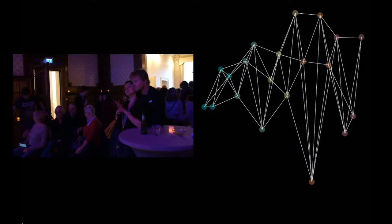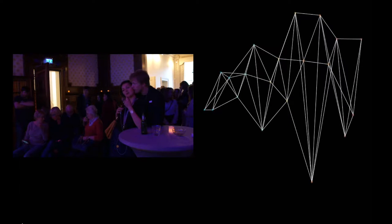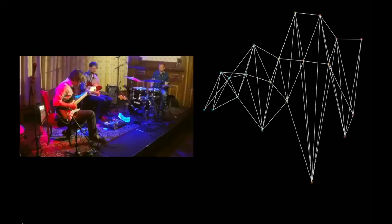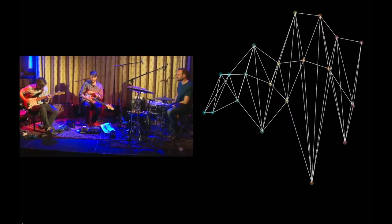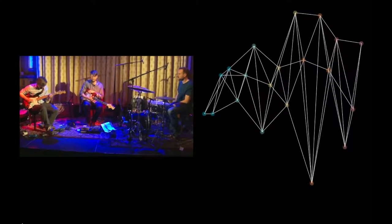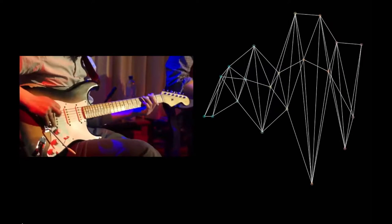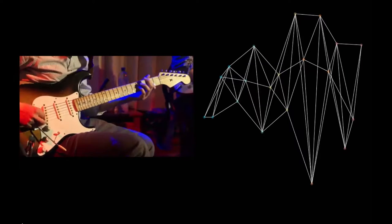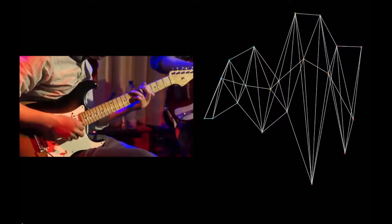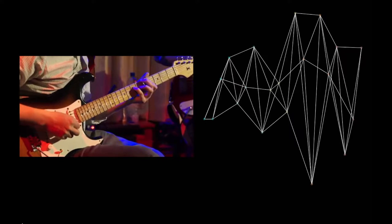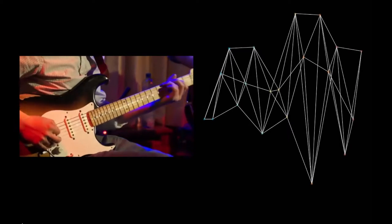Each audience member is visualized by a circle. The radius of the circle responds to the amplitude of the music. There is also movement in this visualization, triggered by the engagement of the people. When they are highly engaged, the circle is at the top of the screen. When the engagement level is low, they move down to the bottom. Lines are drawn between the circles so you could see the audience as a whole group having reactions to each other's emotions.